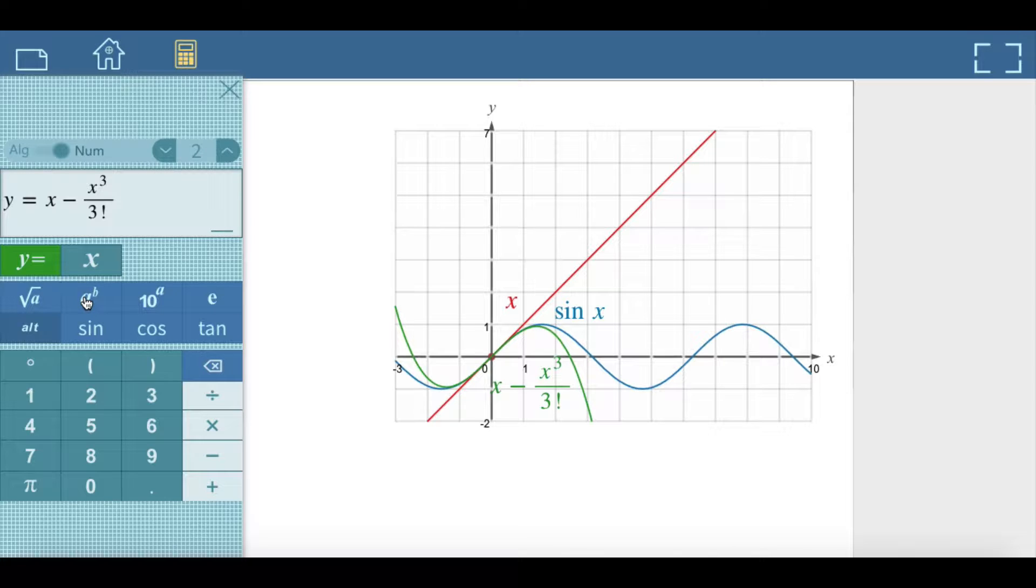First discovery. The graph of the Taylor polynomial of degree 3 seems to be a good approximation of the sine function on interval minus 1, plus 1.